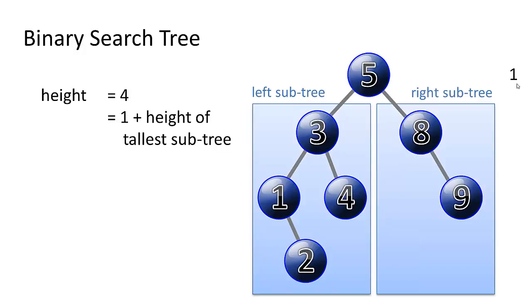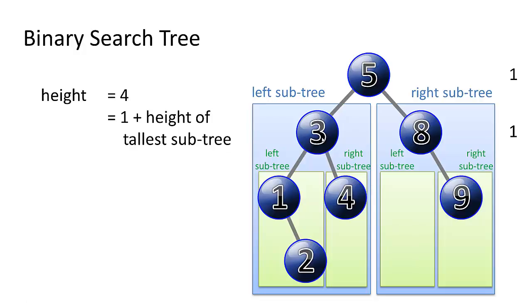So we have a left subtree and a right subtree. For each subtree we could say, well, the height of this subtree is one plus the height of its tallest subtree. So we have a left subtree and a right subtree. And then we could do the same thing on the right subtree of the five. The height of the eight subtree is one plus the height of its tallest subtree.